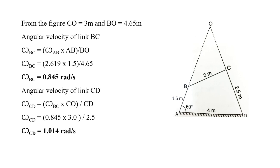Draw the diagram for the instantaneous center. First, draw the four-bar mechanism to an appropriate scale at the given angle. The instantaneous center O of link BC is obtained by producing link AB and producing link DC; their intersection gives point O. By measuring BO and CO from the scaled diagram, we get CO = 3 m and BO = 4.65 m.